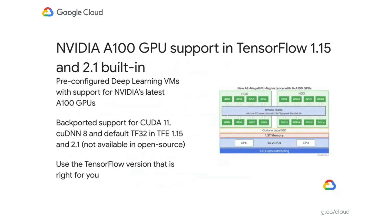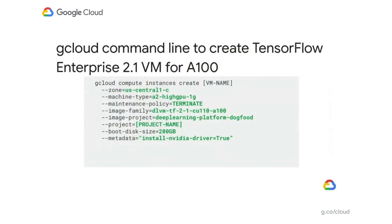Here's a great example of what long-term support can mean in practice. NVIDIA recently launched their A100 family of GPUs, which brings significant performance improvements. In collaboration with NVIDIA, we have updated the TensorFlow Enterprise 1.15 and 2.1 deep learning VM images and added support for CUDA 11, cuDNN 8, and the new TensorFloat-32 data format to help your code take advantage of the A100 architecture. These TensorFlow Enterprise versions are the only official builds of TensorFlow 1.15 and 2.1 with this support before it lands in the mainline open-source releases. You can become an early user of these GPUs on GCP with these pre-built images, using the example gcloud command line shown here to create a TensorFlow Enterprise 2.1 VM which supports A100 GPUs.